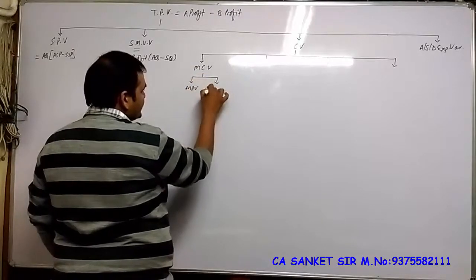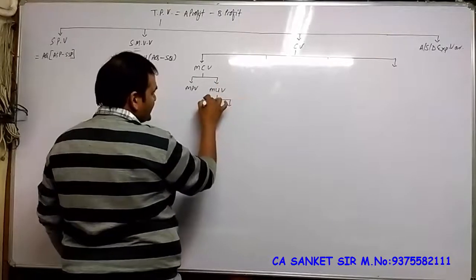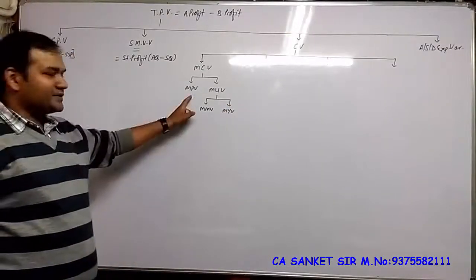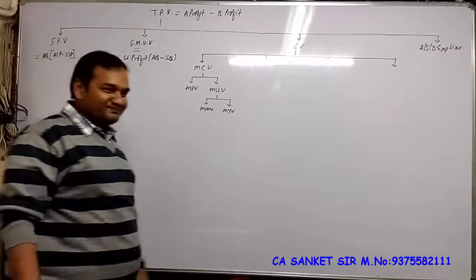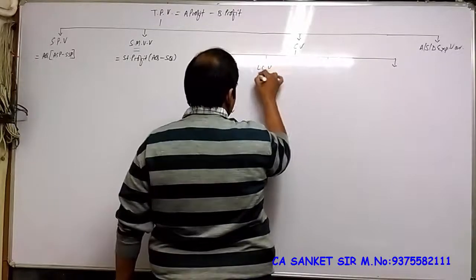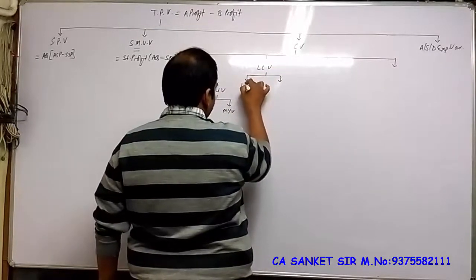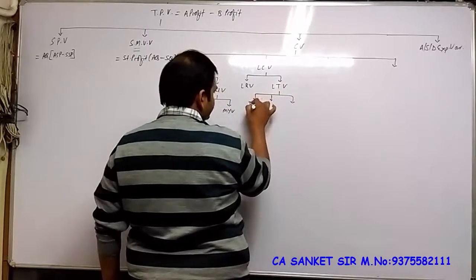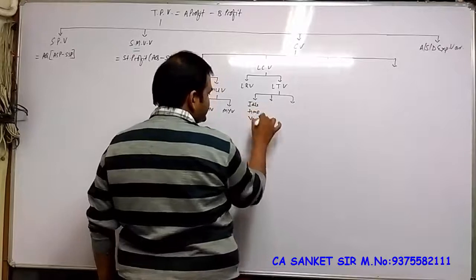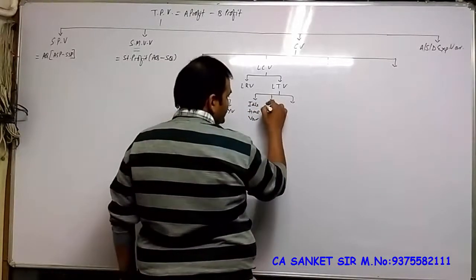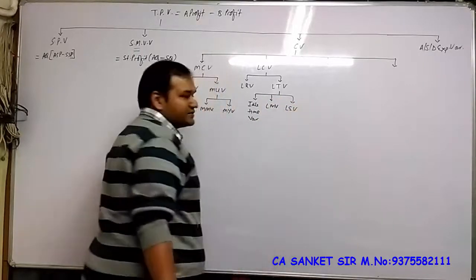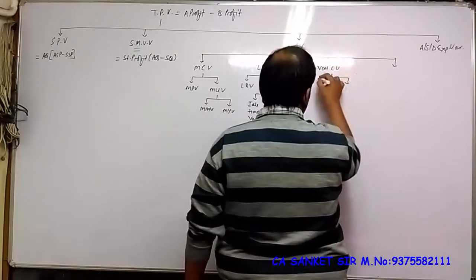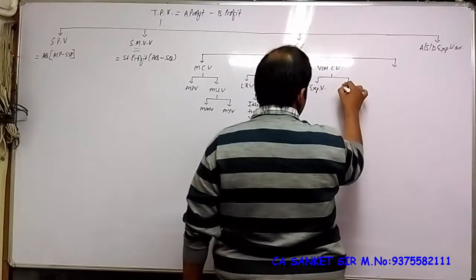Material Cost Variance has two branches: Material Price Variance and Material Usage Variance. Usage Variance has two branches: Material Mix Variance and Material Yield Variance. After that, Labor Cost Variance was studied, with two parts: Labor Rate Variance and Labor Time Variance. Time Variance further had three parts — including Idle Time Variance (which is always negative), Labor Mix Variance and Labor Efficiency Variance. Then Variable Overhead Cost Variance with two parts: Expenditure Variance and Efficiency Variance.